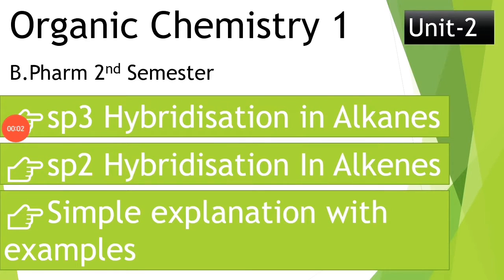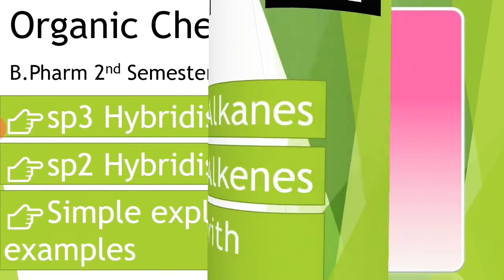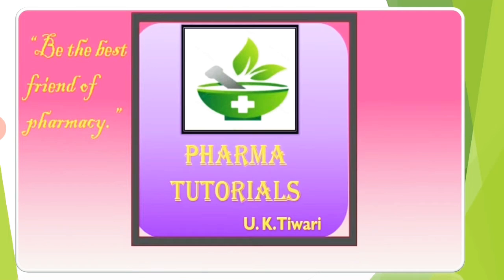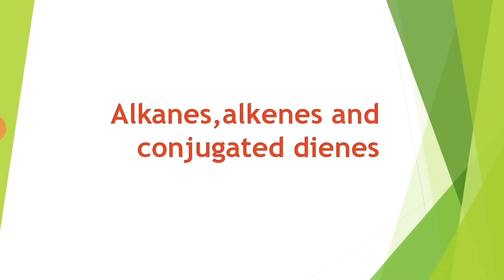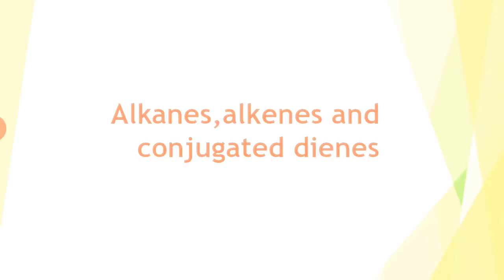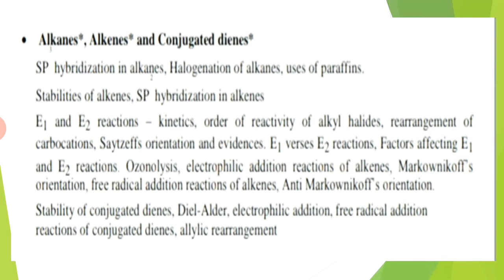Welcome back to my channel. Today's topic is sp3 hybridization in alkanes and sp2 hybridization in alkenes. In the last video lecture, we saw classification, nomenclature, and isomerism in organic compounds. Let us see the next chapter: alkenes and conjugated dienes. The chapter contains sp hybridization in alkenes, halogenation of alkenes, uses of paraffin, stabilities of alkenes, and E2 reaction.